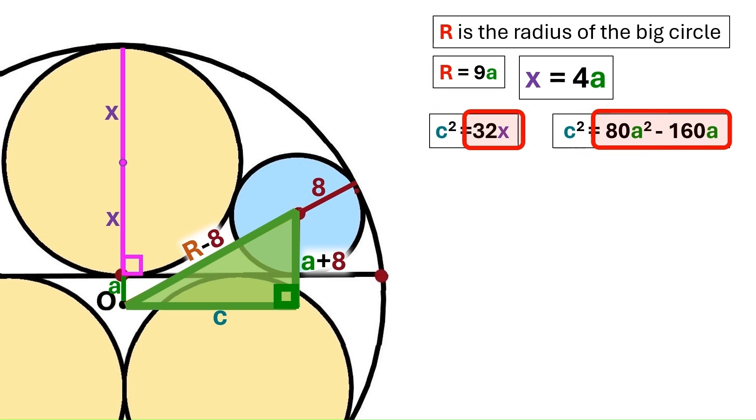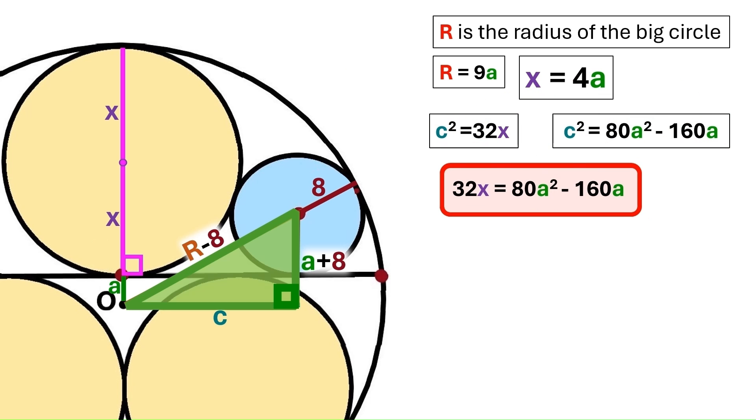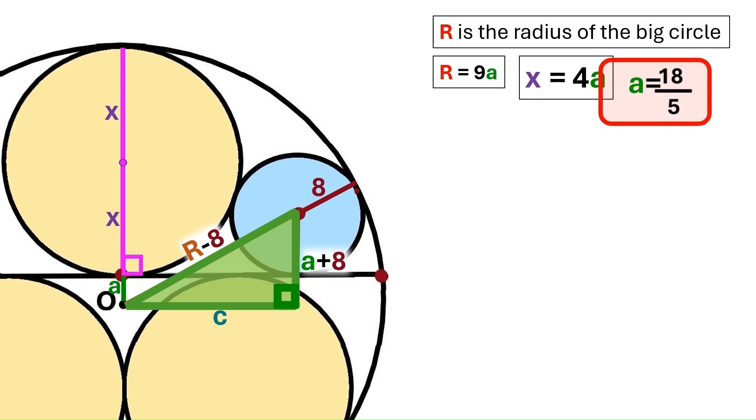Let's put this finding up here and bring down this one to here. It turns out both of these expressions equals c squared. That means we can combine them into a single equation like this. And we know x is 4a. So this 32x equals 128a. We do the math. And a turns out to be 18 over 5. This is a super important finding and we'll keep it here.